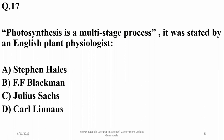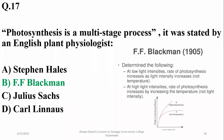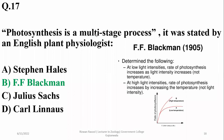Question sixteen: Photosynthesis is a multi-stage process — this statement was given by an English plant physiologist known as F.F. Blackman. Other famous names include Stephen Hills and Julius Sachs, known as the father of plant physiology. F.F. Blackman also made important contributions. Question seventeen: At low light intensity, the rate of photosynthesis can be increased by increasing light intensity, not temperature.